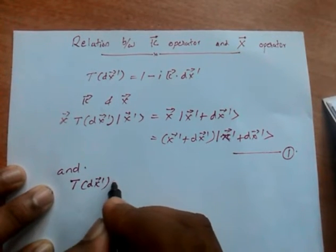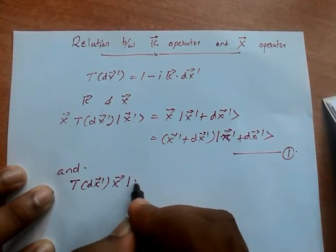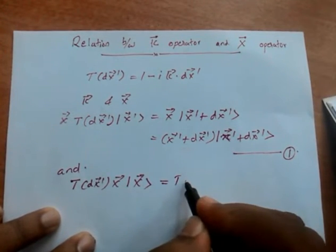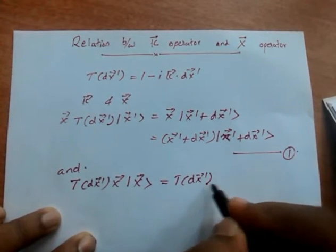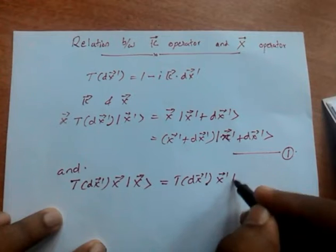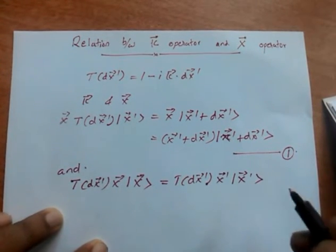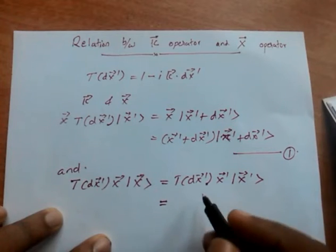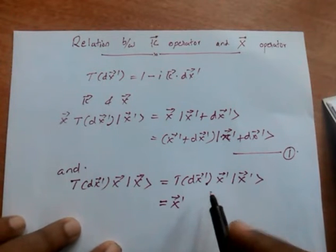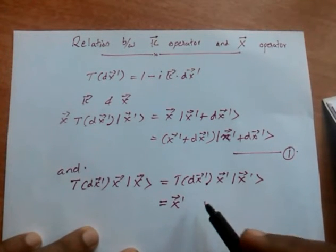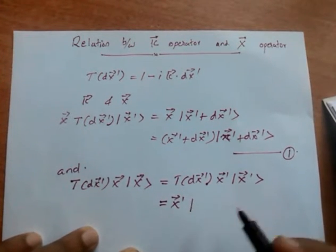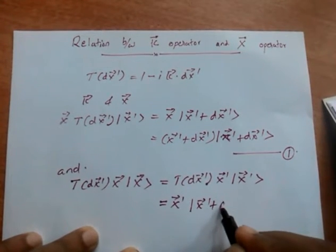If we operate in the other way, T(dx') into x operating on ket |x'⟩ will give T(dx') into the eigenvalue x' times ket |x'⟩, which equals x' into T(dx') operating on |x'⟩, giving x' times |x' + dx'⟩. This is equation 2.